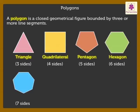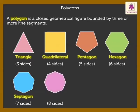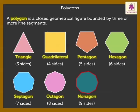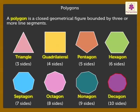A seven-sided polygon is called a septagon. An eight-sided polygon is called an octagon. A nine-sided polygon is called a nonagon. And a ten-sided polygon is called a decagon.